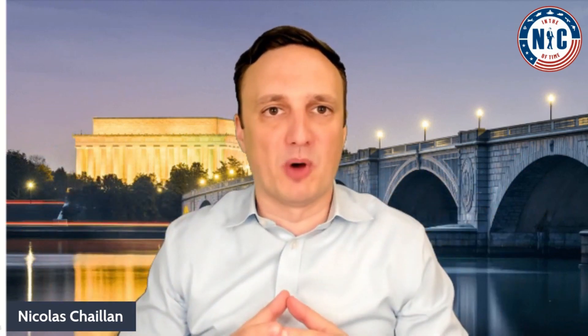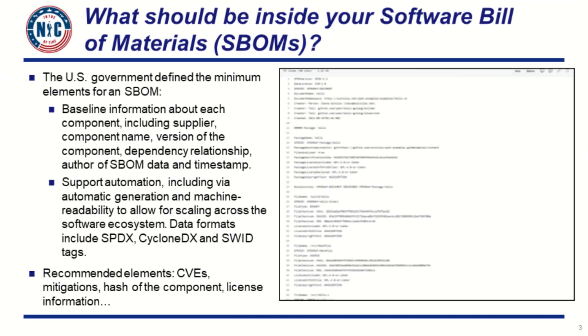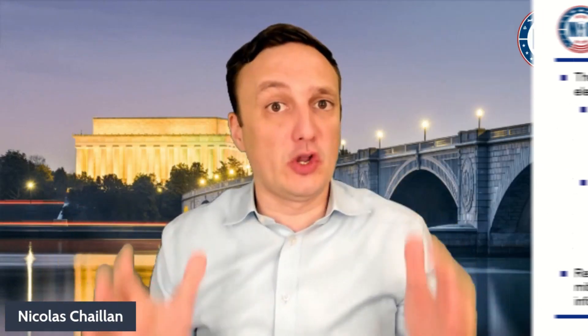So what exactly should you have inside of an SBOM? Thanks to the NTIA, the U.S. government has defined the minimum required elements. That begins with the baseline information about each component, including supplier, component name, version, and dependency relationship, along with the author of the SBOM data and a timestamp. To scale across the software ecosystem, we must automate the process to automatically generate the SBOM and make them machine-readable. Many data formats exist, including SPDX and CycloneDX. It is also very much recommended to include all the CVEs, the mitigations, the hashes of those components, and the license information.